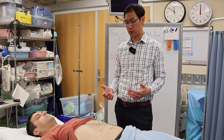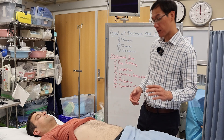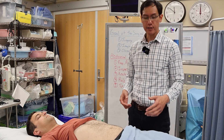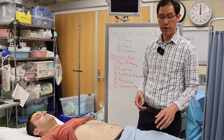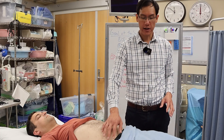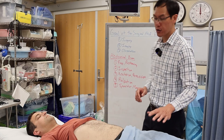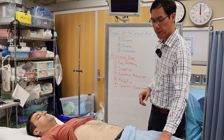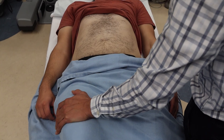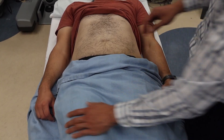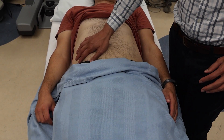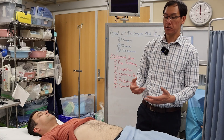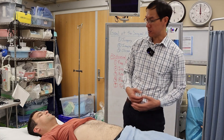Other maneuvers include the psoas sign and obturator sign. The psoas sign is pain in the right lower quadrant with flexion of the right thigh against resistance, and is a sign of retrocecal appendicitis irritating the psoas muscle.